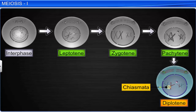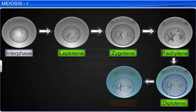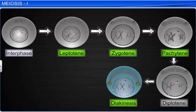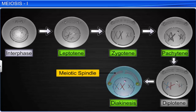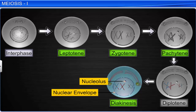The final stage in prophase 1 is diakinesis, during which the chiasmata terminates. Moreover, the chromosomes fully condense and become clearly visible, while the meiotic spindle assembles and prepares the homologous chromosomes for separation. This stage represents the transition to metaphase 1, and ends with the disappearance of the nucleolus and disintegration of the nuclear envelope.